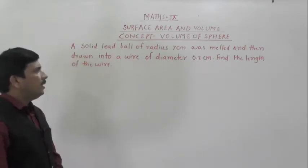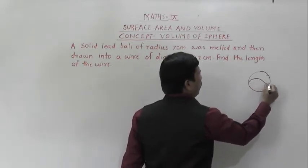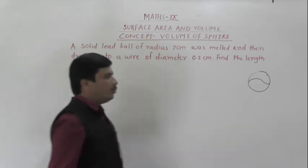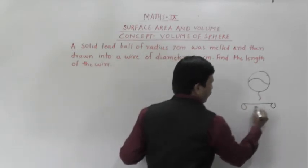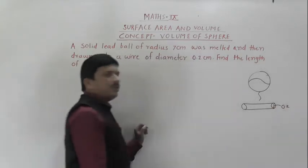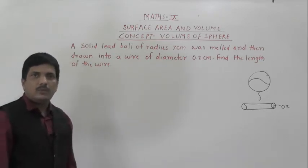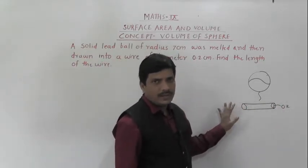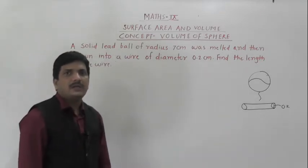So what is given here? A solid lead ball is melted and then drawn into a wire of diameter 0.2 centimeter. They are asking for the length of the wire. Length of the wire means we need to find out the height of the cylinder, because definitely the wire is in cylindrical shape. So we are going to find out its length, which means its height.